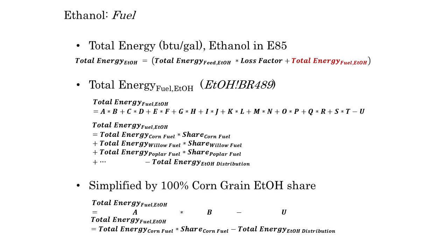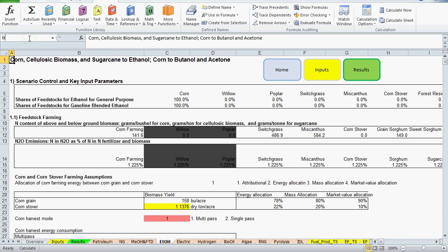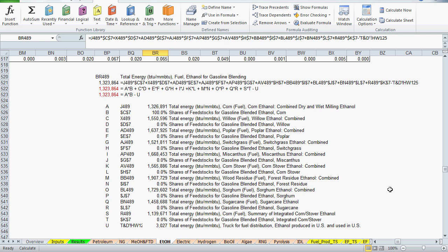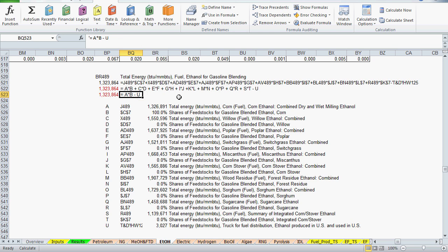Now to the ethanol fuel refining reference. In the formula for this term, there are several biomass feedstocks that could be used to make ethanol, and the total energy for each biomass-to-fuel process is multiplied by a share percentage that can be user-defined. By default, only corn grain ethanol is used in this pathway, so the other references can be ignored and the formula just has three terms: total energy for corn grain ethanol refining, the 100% fuel share, and this ethanol distribution value, which is subtracted. Looking at the deconstruction, we can see the total energy and fuel share values for each feedstock, then the last reference from the T&D sheet — the ethanol distribution value that is subtracted out, because this ethanol fuel will be blended with gasoline.